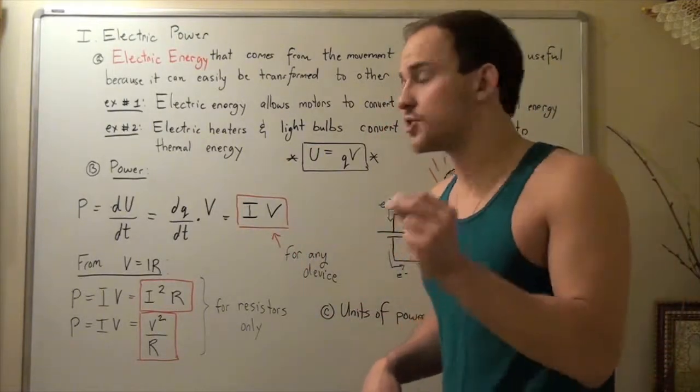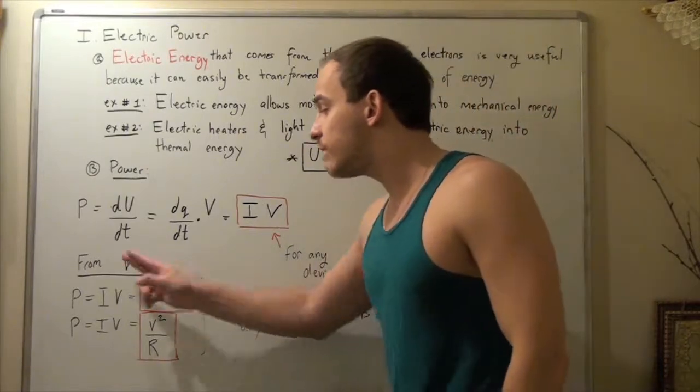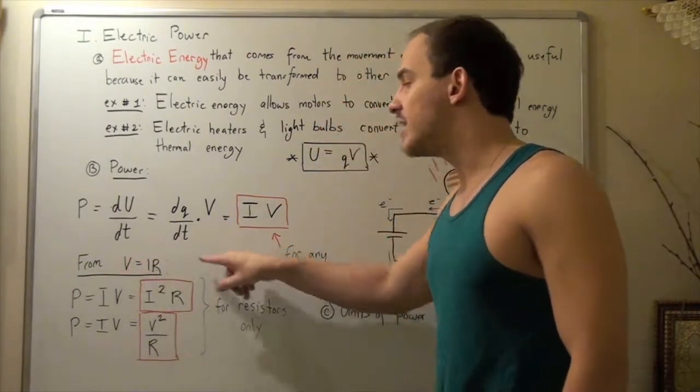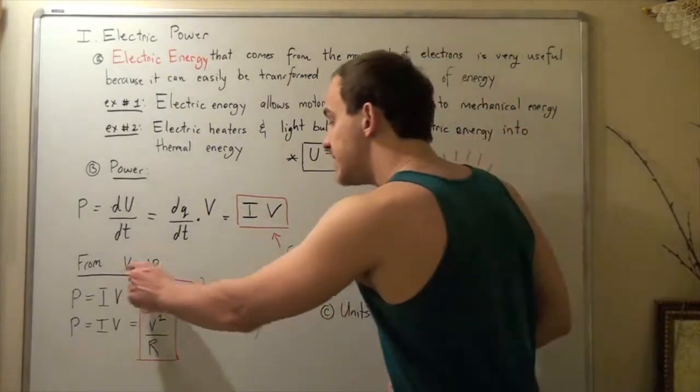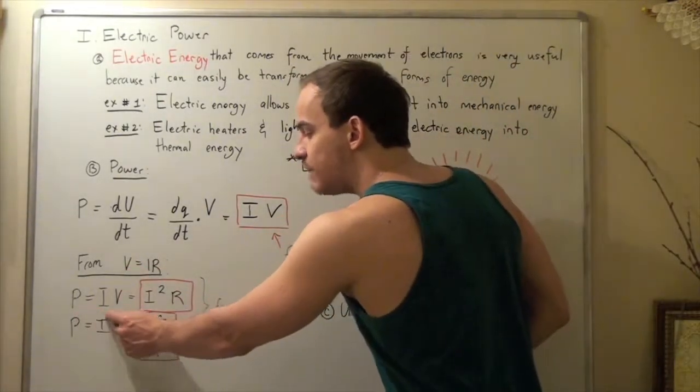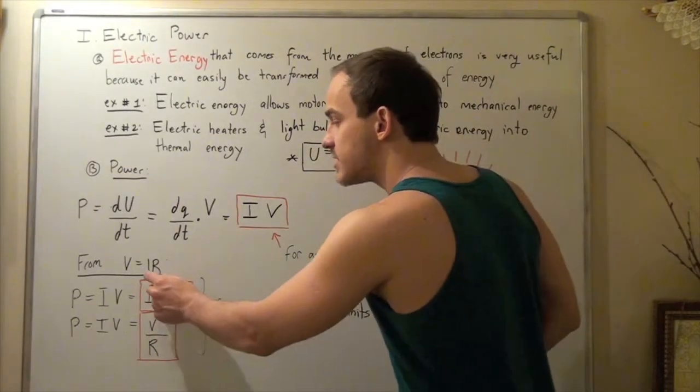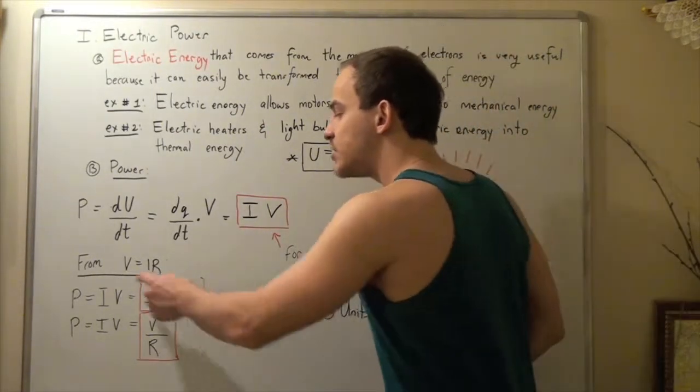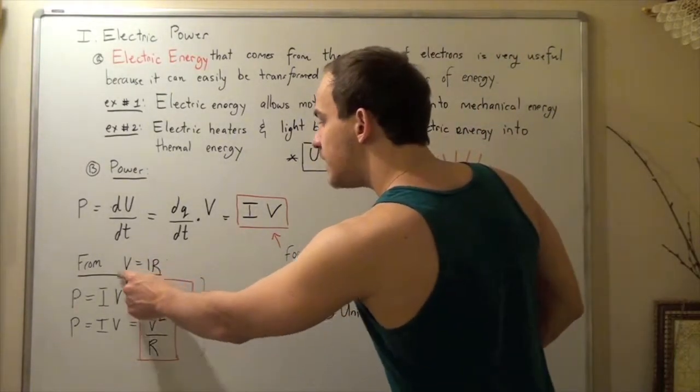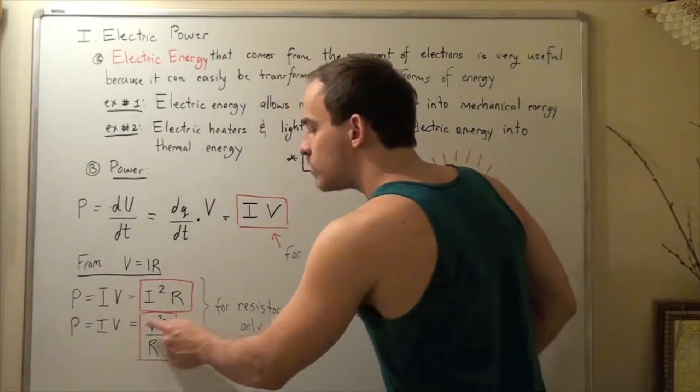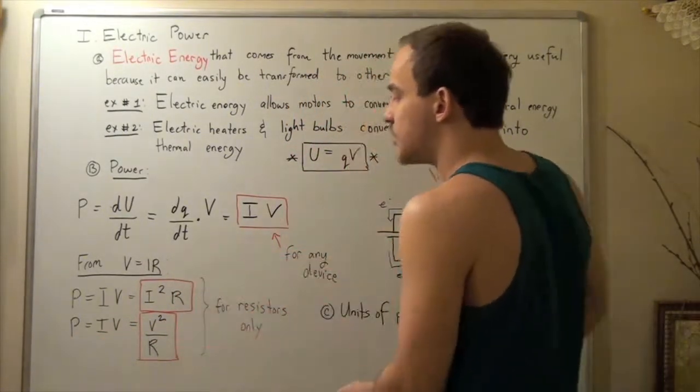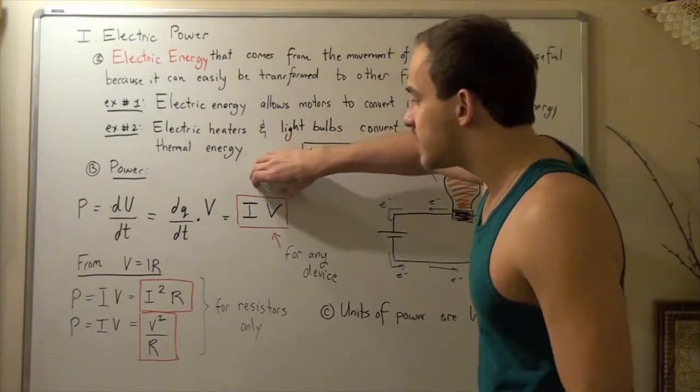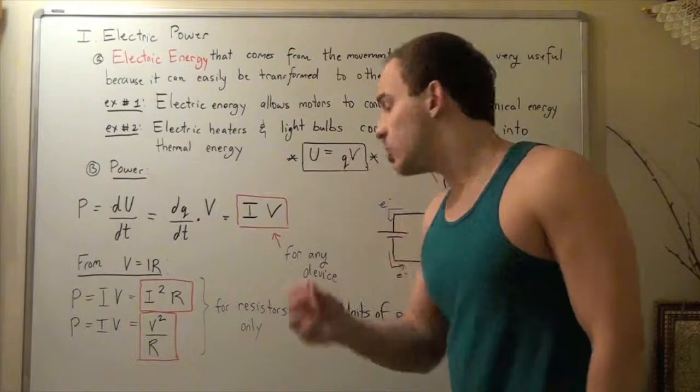Now whenever we talk about resistors, such as, for example, light bulbs, we can use also the following two equations. Remember, when we talk about circuits and resistors, we know that voltage equals I R. This is simply Ohm's Law. So if we plug in this V into this V, we get P equals I times V equals I squared R. Now if we rearrange Ohm's Law and plug in our V over R into our I, we get P equals IV equals V squared over R. Now these two equations and this equation are analogous, but these two equations can only be used for devices such as resistors, while this guy can be used for any sort of device, including our resistors.